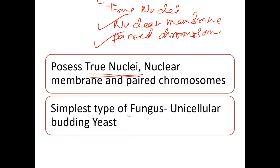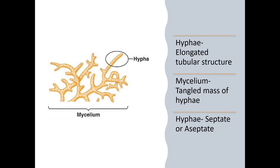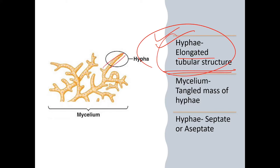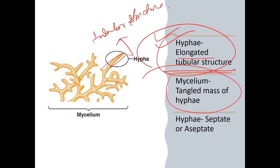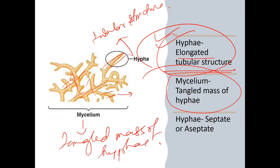The simplest type of fungus is unicellular budding yeast. Hypha are elongated tubular structures. Mycelium is the tangled mass of hypha. Hypha can be septate, meaning it may have a septum, or it may be aseptate.